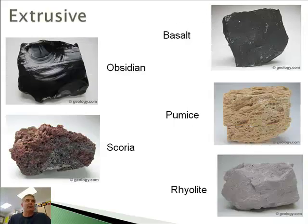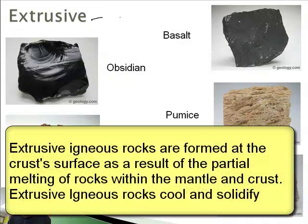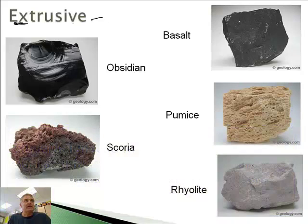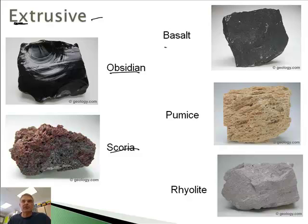What about extrusive rocks? Extrusive means they cooled on the outside — "ex" means outside — the outside of the earth. That's what extrusive igneous rocks means. Here are some varieties: obsidian, scoria, basalt, pumice, and rhyolite.